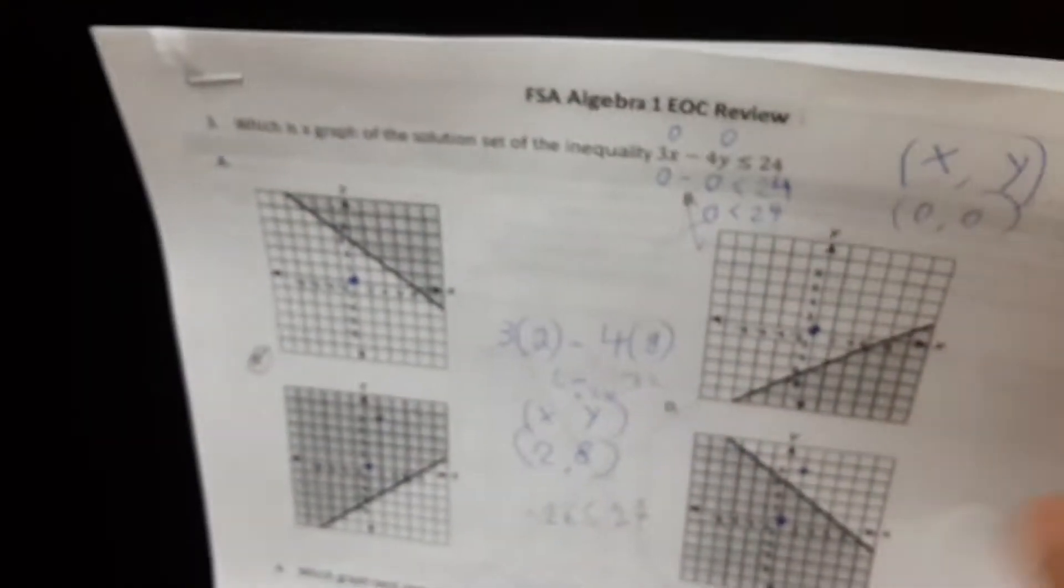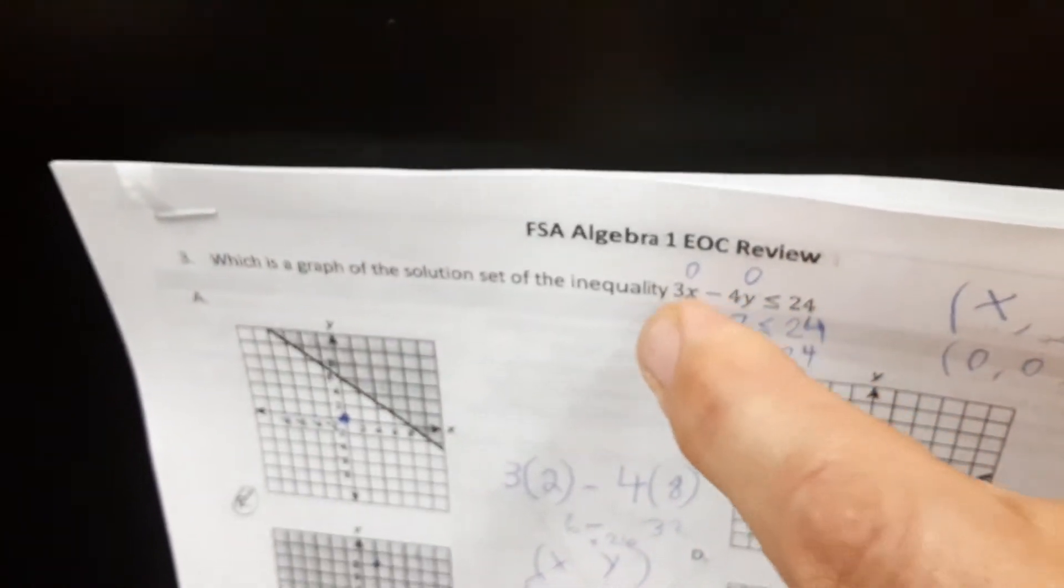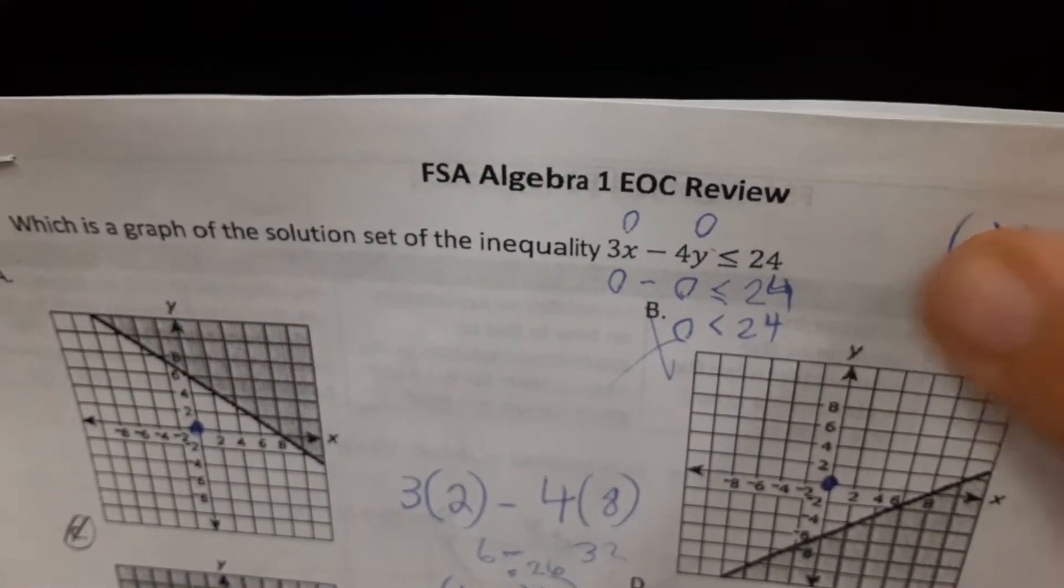So how do we get started on this? What do we do? We plot zero, zero. That's like this one, this one, this one, and this one. What did we find out when we put zero, zero in there? We showed it in the equation. We found out it was true.